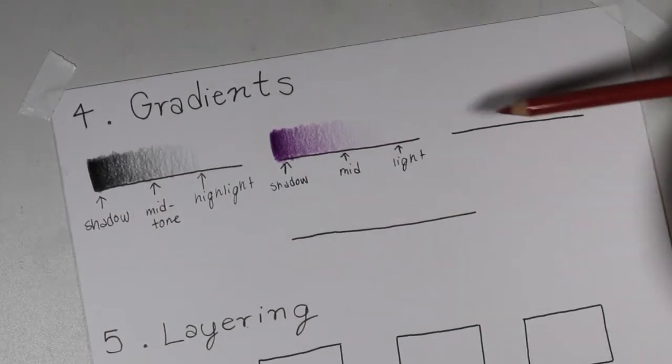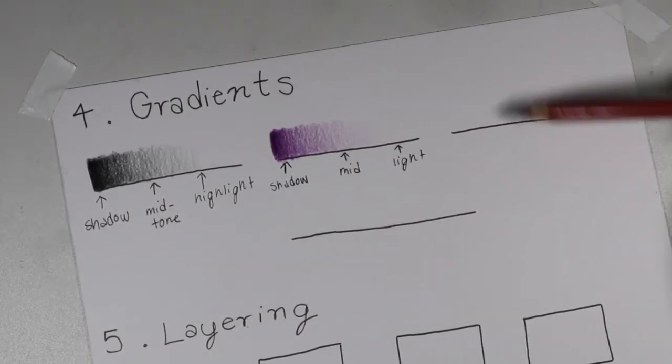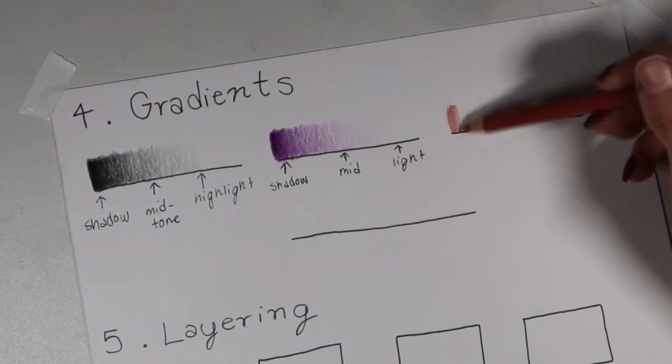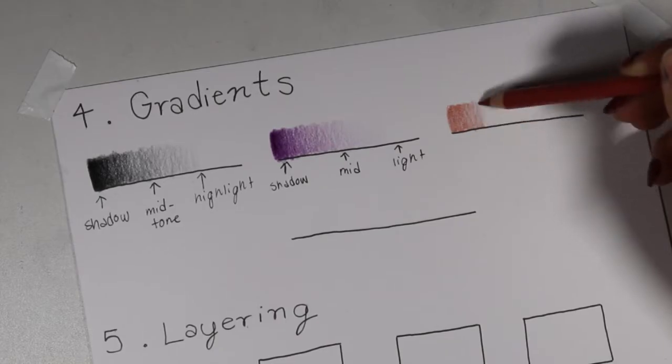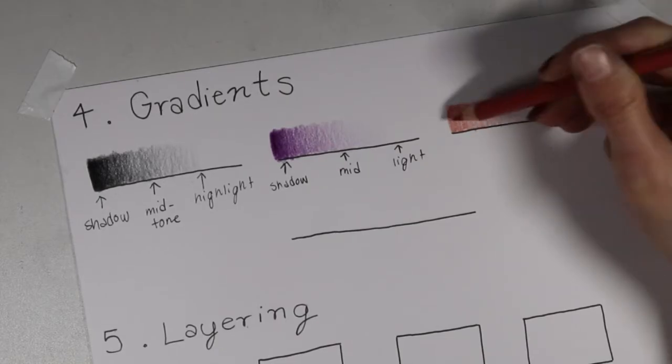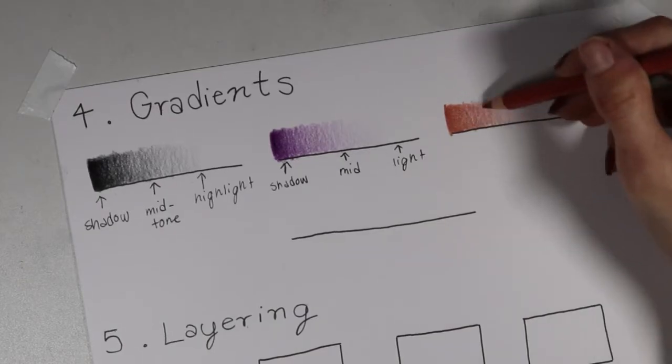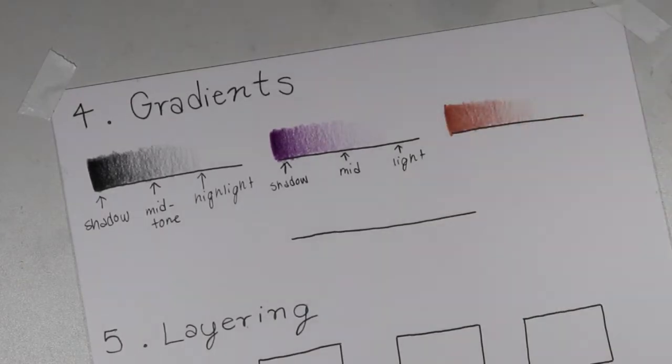Now I'm going to use a Polychromos pencil for this third value scale because Polychromos pencils are a little bit less soft and waxy so it's a different feeling. I've noticed that sometimes you get a little bit less of a grainy look when you're using Polychromos since it's an oil-based pencil versus a wax-based pencil. You can get the same result with Prismacolors as you can Polychromos.